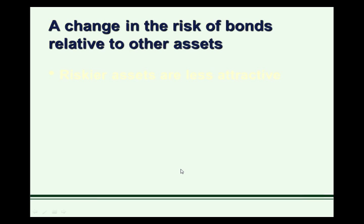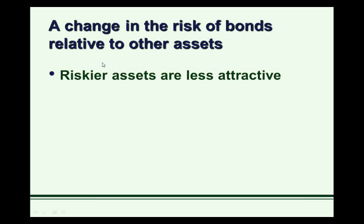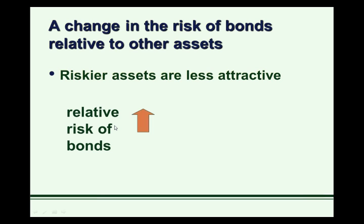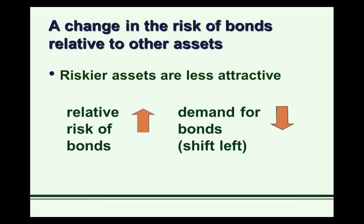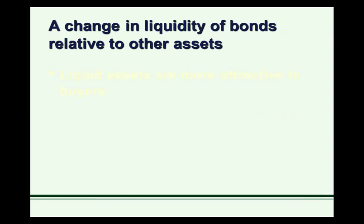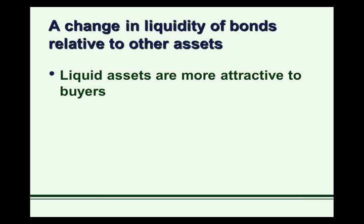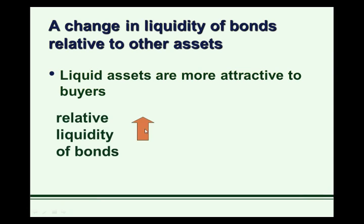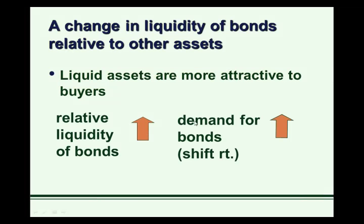The risk of bonds is also going to determine whether bonds are attractive as an investment. Riskier assets are less attractive, holding all else constant — people don't like risk. So if bonds are perceived to be riskier than other assets than they were before, we can expect bond demand to fall or shift to the left. A change in liquidity of bonds relative to other assets also matters. Liquid assets are more attractive to buyers; liquidity refers to how easy it is to convert an asset to cash. If bonds become easier to buy and sell quickly, we would expect demand for bonds to increase because they become more attractive as a financial asset.